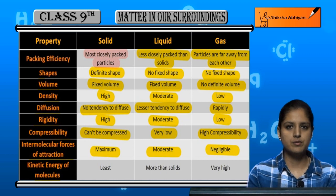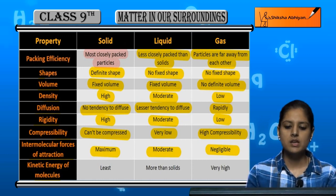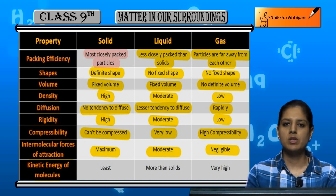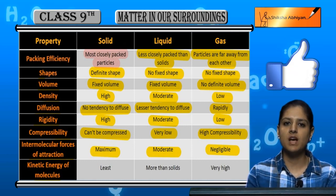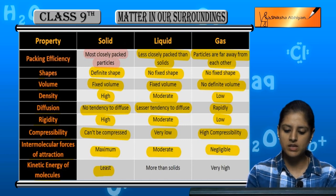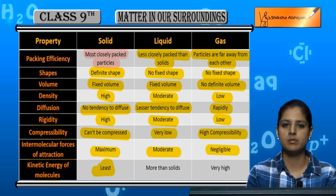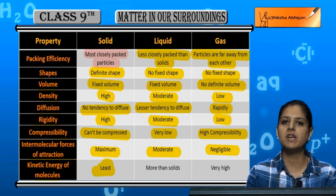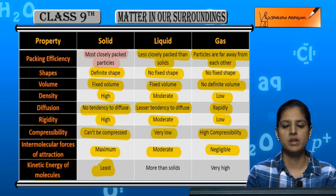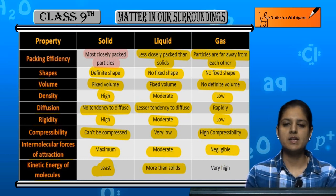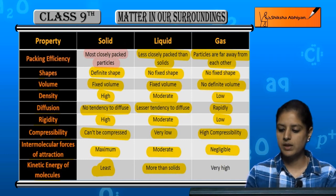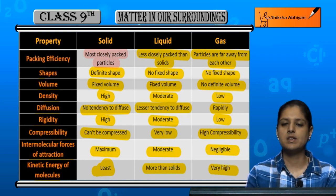Kinetic energy of molecules: because in solids the intermolecular attraction is the strongest, the kinetic energy is the least and particles are not free to move anywhere. In liquids, kinetic energy is more than in solids. And in gases, the kinetic energy is very high.